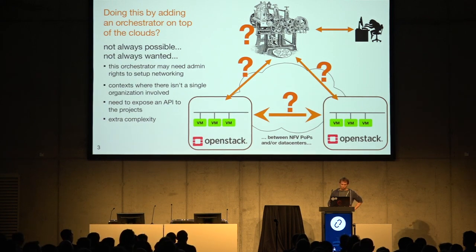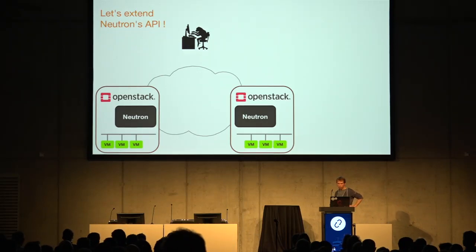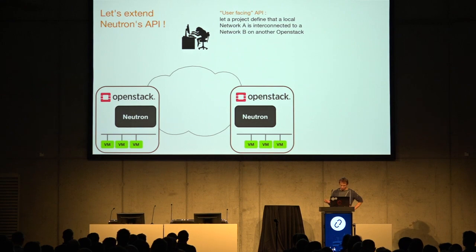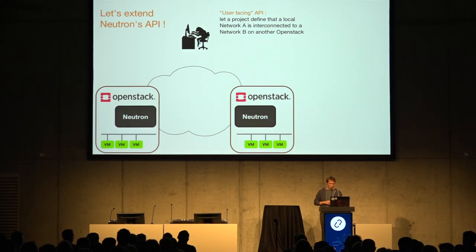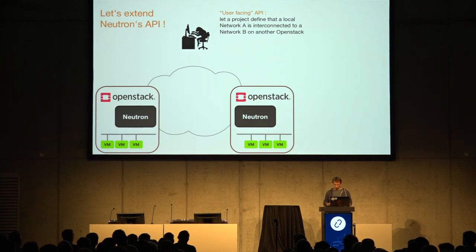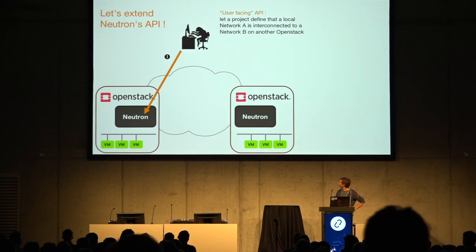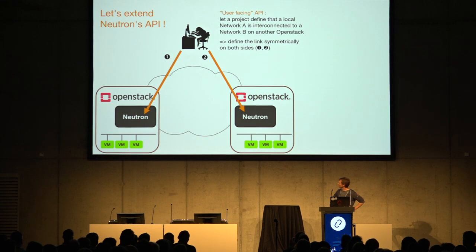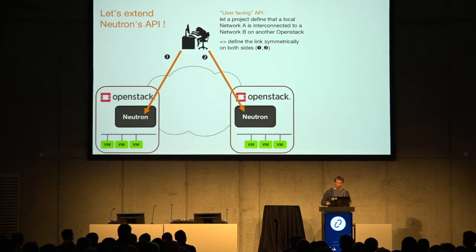The proposal we came up with extends Neutron's API with two phase sets. The first phase set is the user-facing API — a simple API that lets a tenant project define that a local resource, Network A, needs to be interconnected to a remote resource, Network B, on another OpenStack. The end user, the project, makes symmetrical calls on both OpenStack clouds: on one side you say you want to connect Network A here with Network B on the other side, and on the other side, you say you want to interconnect Network B here with Network A on the other side.